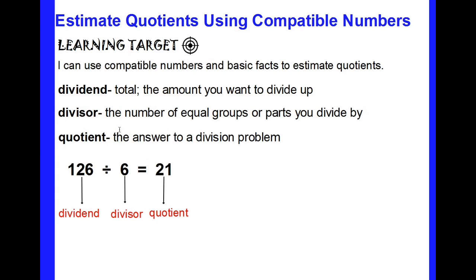Our quotient is the answer to a division problem. So 126 divided by 6 equals 21 — this shows us the different parts: the dividend, the divisor, and the quotient. That's a quick review of division; let's go on to today's work.